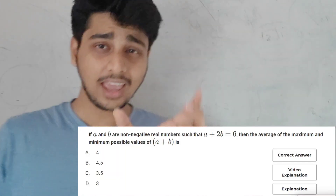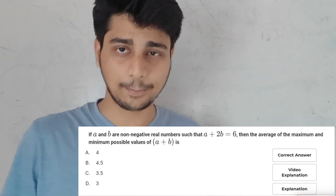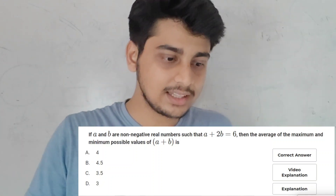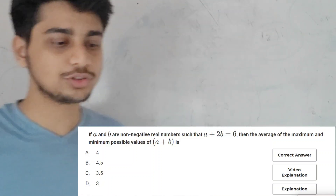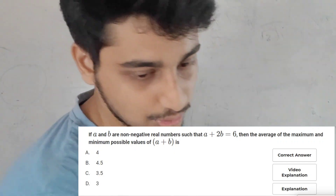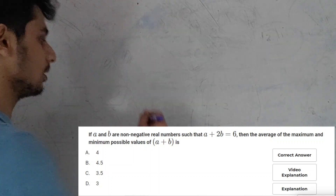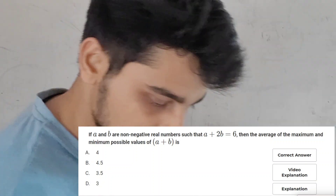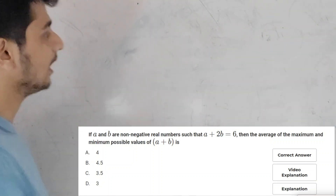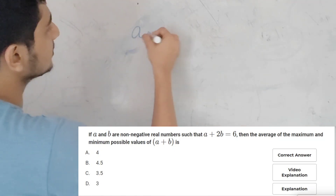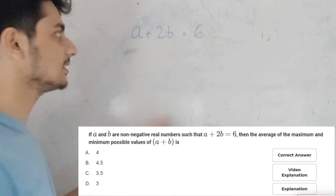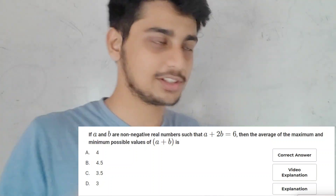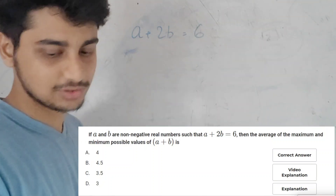The next question: If A and B are non-negative real numbers such that A plus 2B equals 6, then find the average of the maximum and minimum possible values of A plus B. Non-negative means zero or positive real numbers. A plus 2B equals 6.